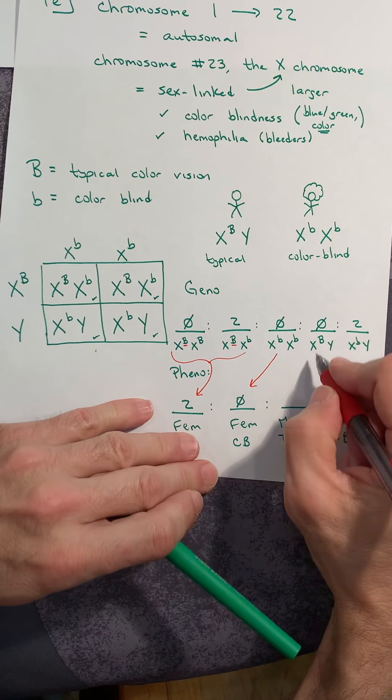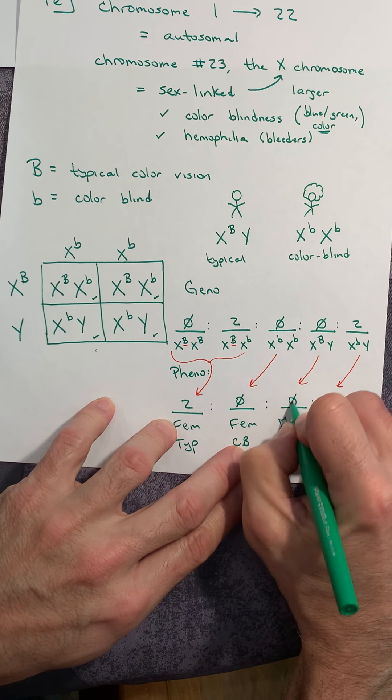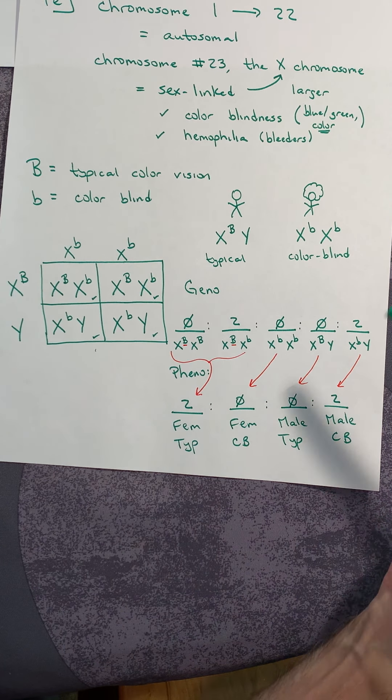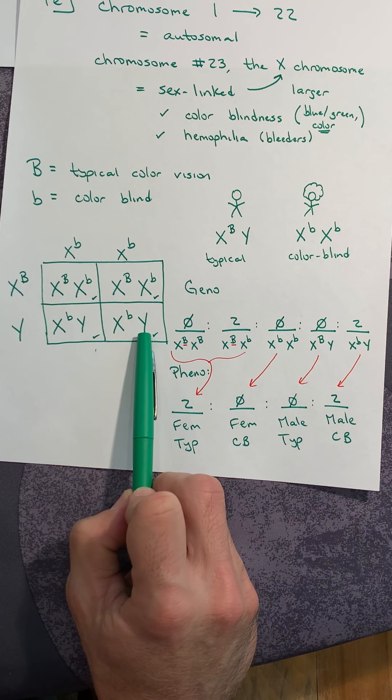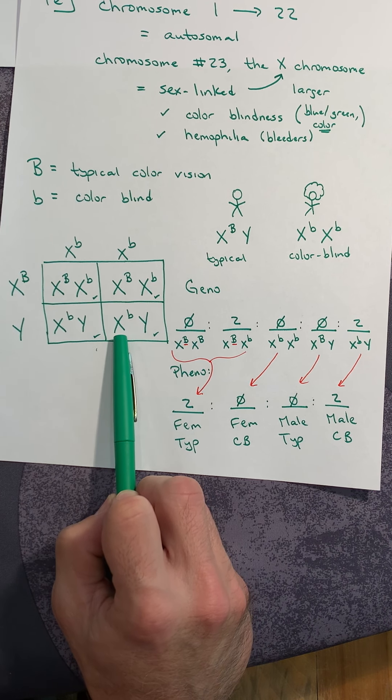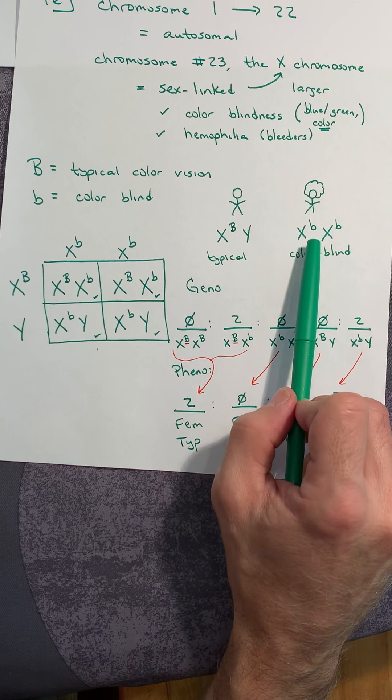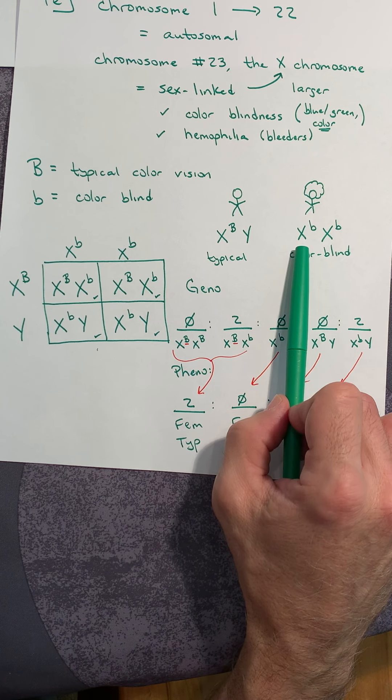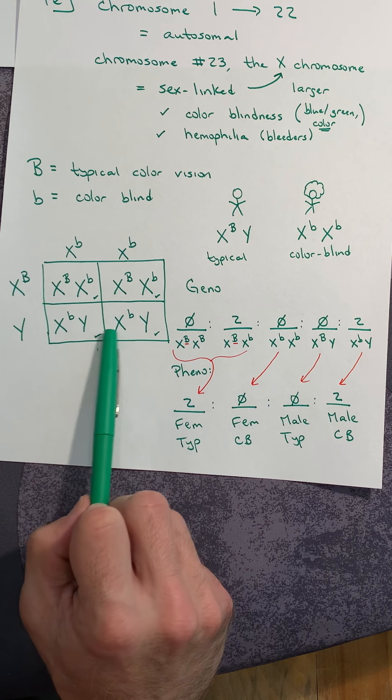We don't have any typical males, but we do have two colorblind males. As a male, I received my Y from my father—that's why I'm a male—so I received my X chromosome from my biological mother. If the female expresses hemophilia or colorblindness, the only thing that she has to offer is the detrimental allele. That means when mom is colorblind, 100% of her sons will be colorblind. If mom is a hemophiliac, 100% of her sons will be hemophiliacs.